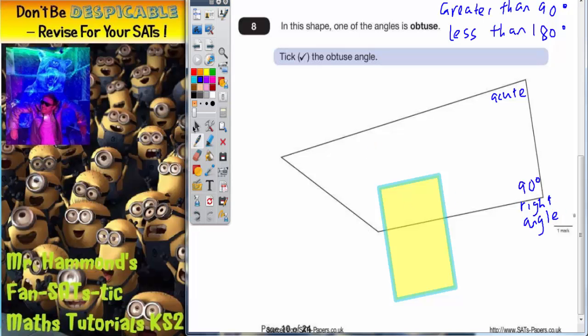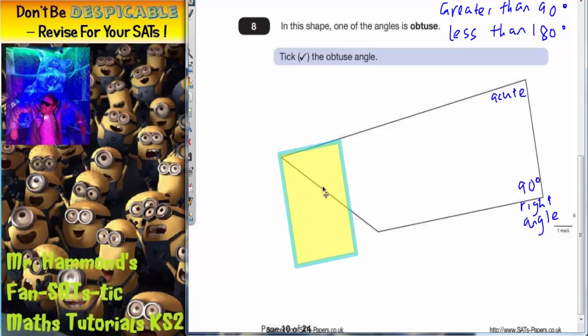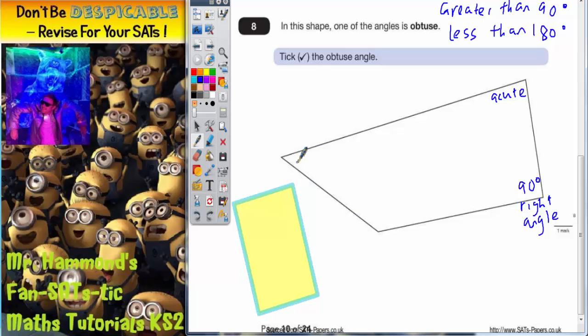If we go to the top corner over here and just slightly rotate that so that it fits there, you can see that this angle inside here is much less than the 90 degrees, so that also must be acute.